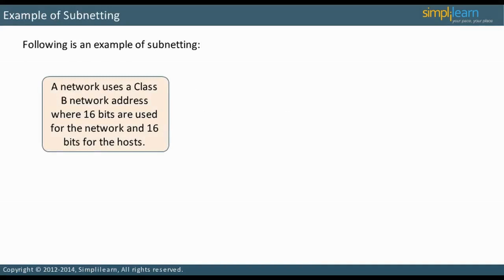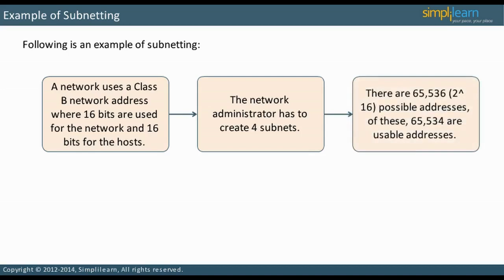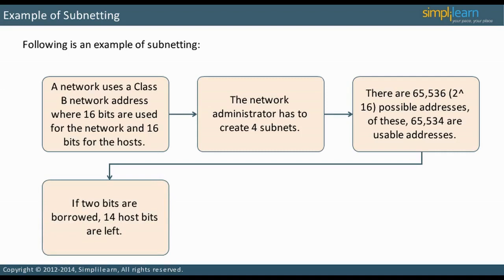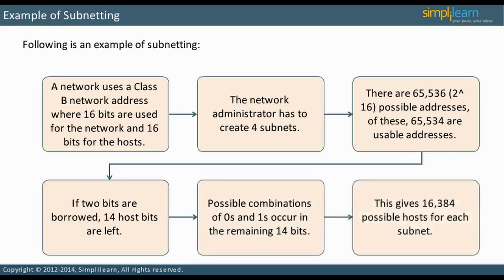Suppose a network uses a Class B network address where 16 bits are used for the network and 16 bits are used for the hosts. The network administrator should create four subnets. There are 65,536 (2 to the power of 16) possible addresses available to assign to hosts, of which 65,534 are usable. Since 4 is 2 to the power of 2, borrow two bits, leaving 14 host bits. This produces 16,384 possible hosts, but only 16,376 usable hosts because two addresses are reserved per subnet.